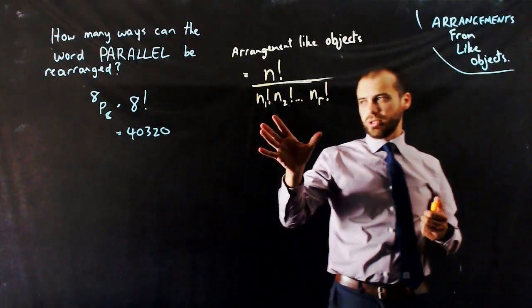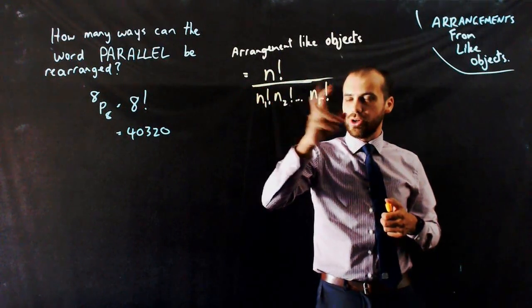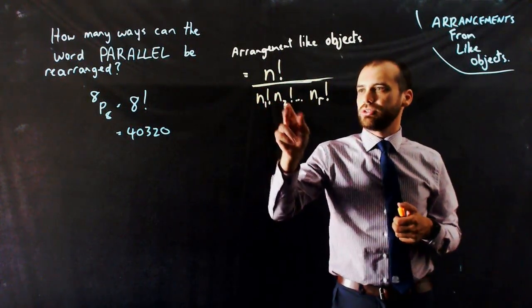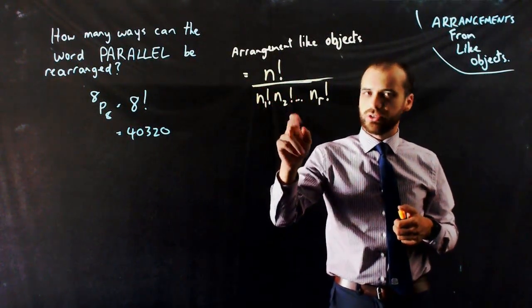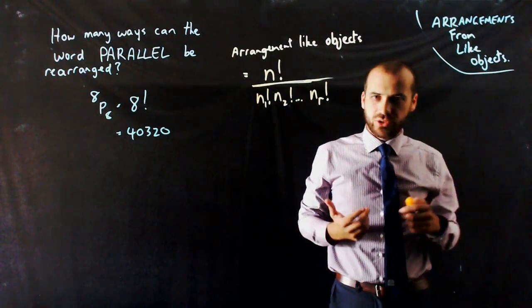So here's the formula I'm going to use: N factorial over N1 factorial times N2 factorial dot dot dot times NR factorial.